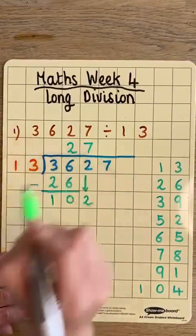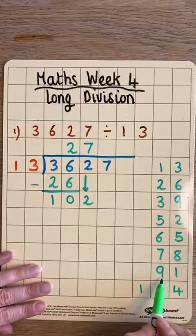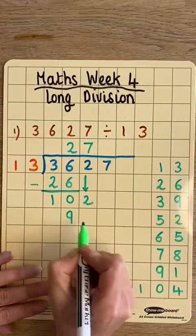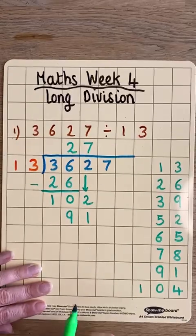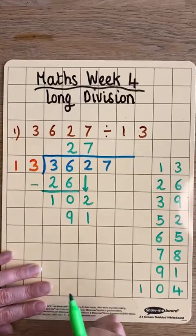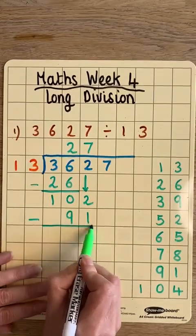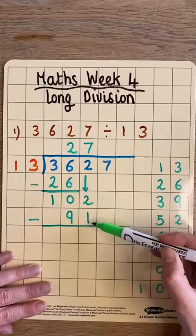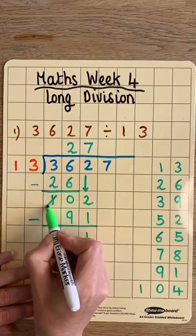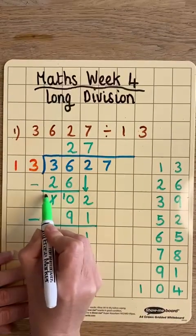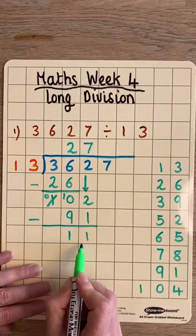So 7 goes on top of the bus stop. Remember, 7 thirteens is 91, so that number goes underneath our dividend, 102. We use that to find our remainder: 102 take away 91 — taking 1 from the tens column, 10 take away 9 is 1 — so I have 11 remaining. Instead of putting the 11 up above, the 7 brings down our final digit to make 117, which we now divide by 13.